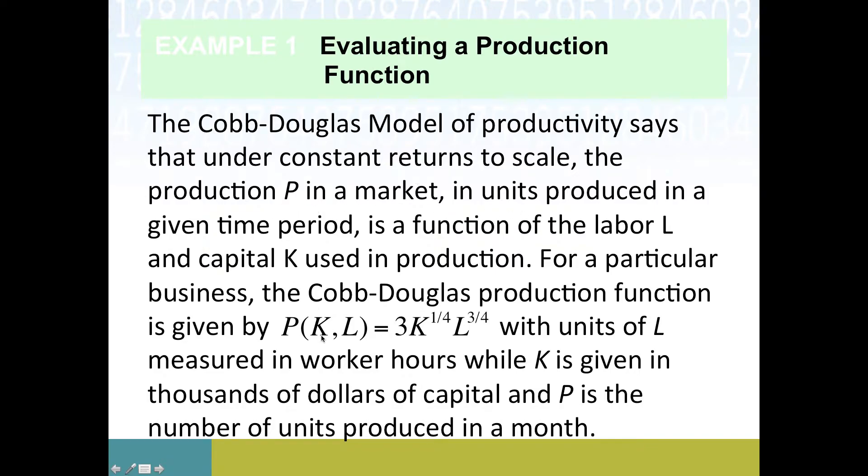We're assuming constant returns to scale. This production depends on capital, which clearly starts with the letter K (that's sarcasm), and then labor L. We're going to measure labor in worker hours in a given month and K as thousands of dollars of capital, and then P, the production, is the output. Our first input is K, our second input is L, using them both inside the parentheses with a comma separating them, and our function name is P.